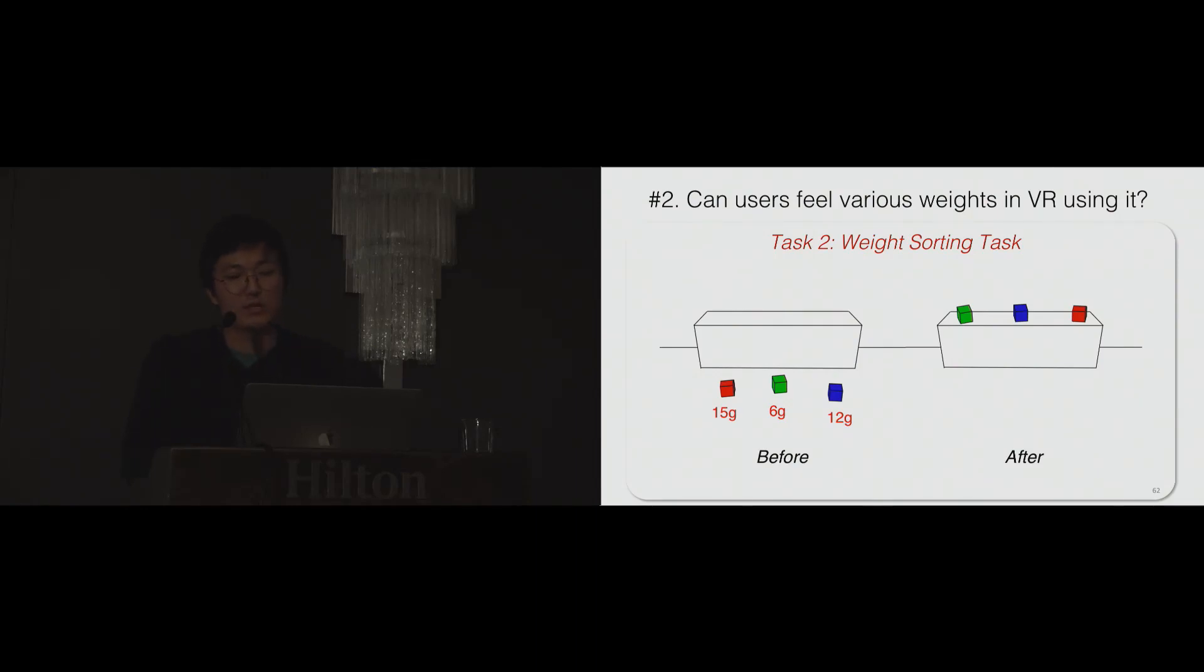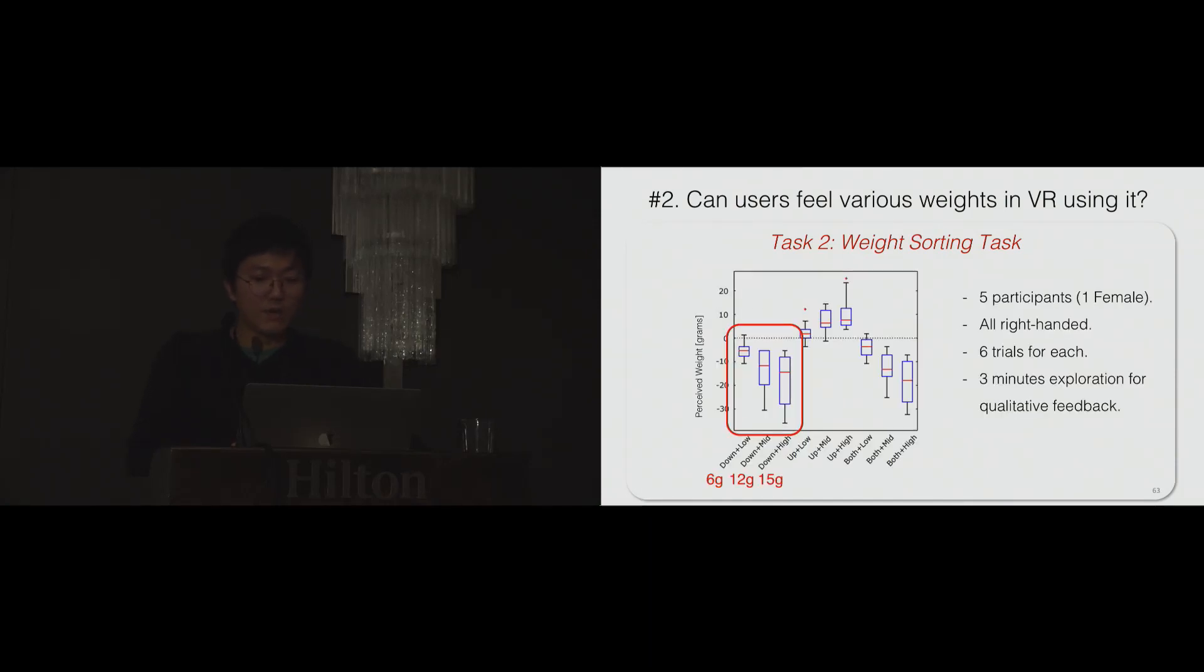After the first task, we wanted to get qualitative feedback about how the device works when grasping objects in VR. To do this, we gave users a simple weight sorting task. We rendered three blocks with different weights. Users picked up and felt each block's weight, and they placed the blocks on top of the shelf in order of weight. For weight rendering of three blocks, we used the same signals in the first task. From the first task, the three perceived downward forces were about 6 grams, 12 grams, and 15 grams. There were five participants, and they did six trials each.